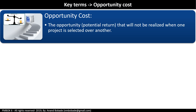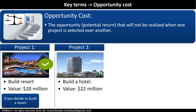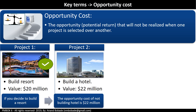Opportunity cost is the cost given up by selecting one project over another — it is the cost of the project that was not chosen. For example, you have two projects: Project 1 costs $20 million to build a resort, and Project 2 costs $22 million to build a hotel. If you decide to build the resort, the opportunity cost of not building the hotel is $22 million.